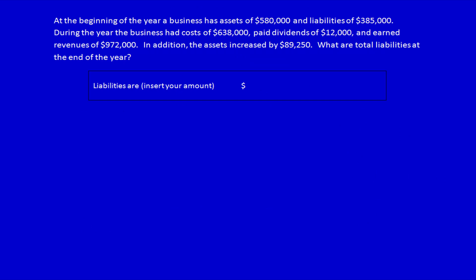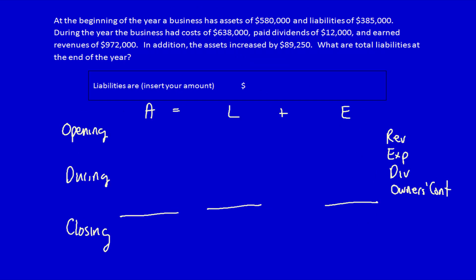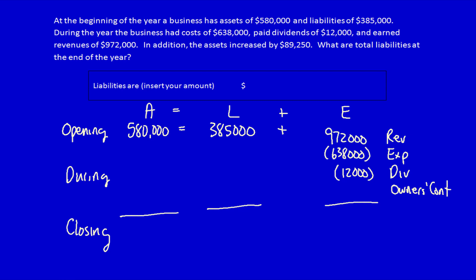I'm going to set up my matrix right away and fill in the known numbers. At the beginning of the year, a business has assets of $580,000 and liabilities of $385,000. During the year, the business has expenses of $638,000 (negative), paid dividends of $12,000, and earned revenues of $972,000. In addition, assets increased by $89,250.